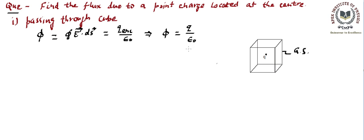If you followed the previous videos, we calculated the flux due to a point charge in one of them and the total flux came out to be q upon epsilon naught — the same thing stated by Gauss's Law. So this part we can easily handle.